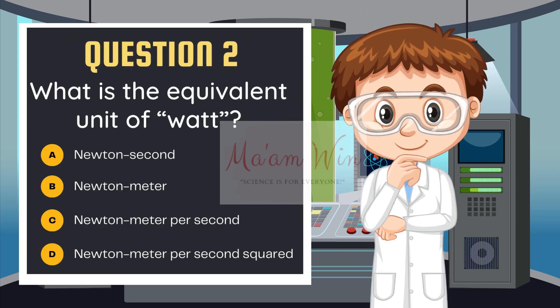Question number 2. What is the equivalent unit of watt? Letter A, newton second. Letter B, newton meter. Letter C, newton meter per second. Letter D, newton meter per second squared.